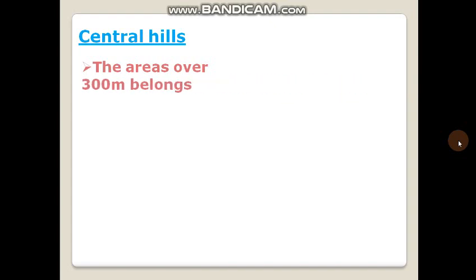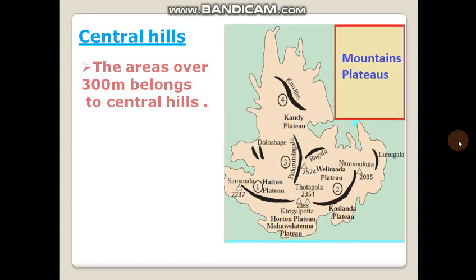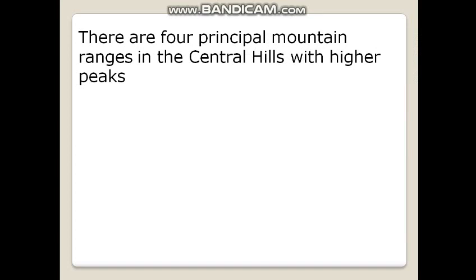The areas over 300 meters belong to the central hills. In this map I have given you the Knuckles, Kandy Platter, Heeralukothe, Hatton Platter, Horton Platter, Mahawala Tenna Platter, Totupola, Uwamoney Platter, and Koslanda Platter. There are four principal mountain ranges in the central hills with higher peaks.